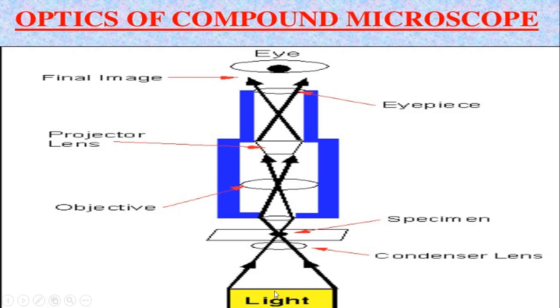Now see, in this yellow color light is shown. There are three main types of lenses which comes under this compound microscope. First is eyepiece lens which is near the eye. Second is condenser lens which is near the light. And third is objective lens which is near the object.